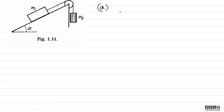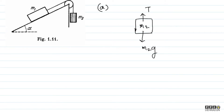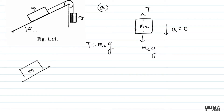In case A, M2 should start coming down. So now we can work with free body diagrams. For M2, tension is equal to M2 into g. Now we will talk about M1.